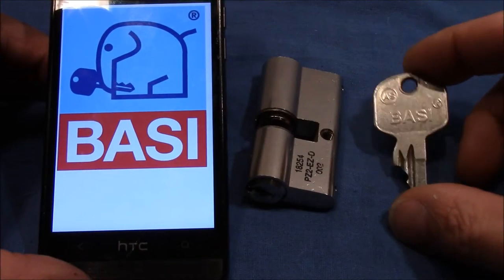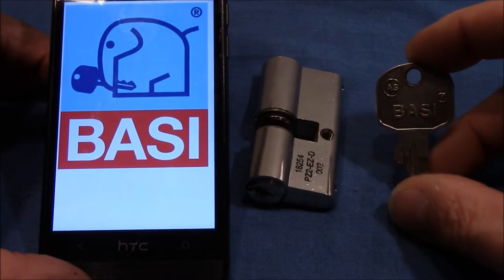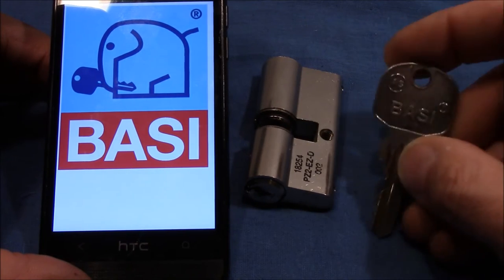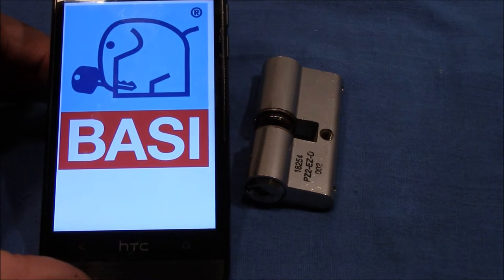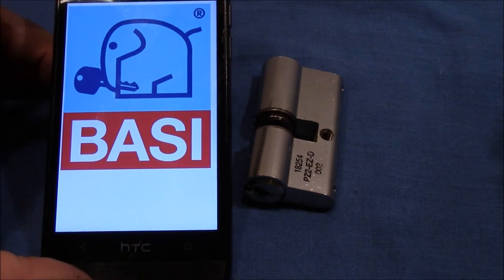Hello and welcome to this video. I want to show you today this Barsi Eurocylinder, and the elephant is the logo of the company Barsi, which is a German company.